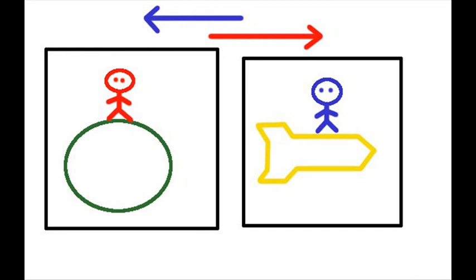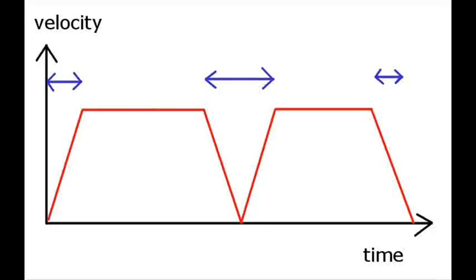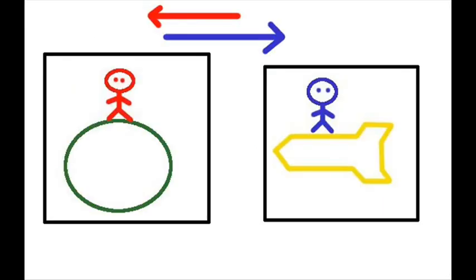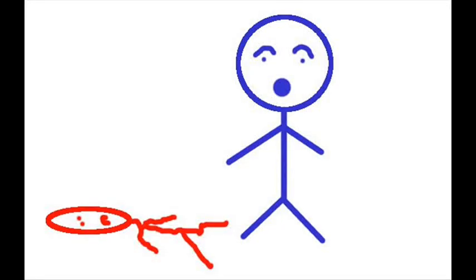Therefore, in relation to each other, the only difference between their relative speeds is the periods of acceleration and deceleration. So my question is this: why is it, when their speeds relative to each other are the same, should time move more slowly for one and not the other?